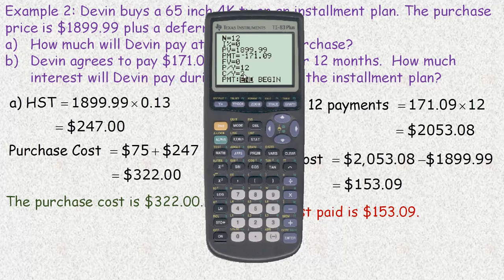Compounding slightly changes the payment per month, but most people don't have to worry about that — according to Canadian law, everybody calculates it the same way. So I'll go up to the interest rate and solve for it using Alpha + Solve. It's actually telling me the interest rate is 15%. So that's another way, using the TI-83 calculator, to figure out the interest rate. It's very convenient for calculating payments.